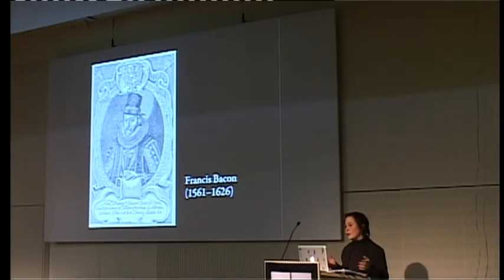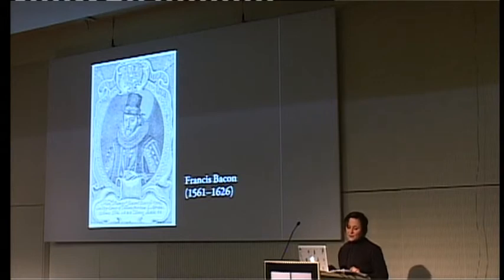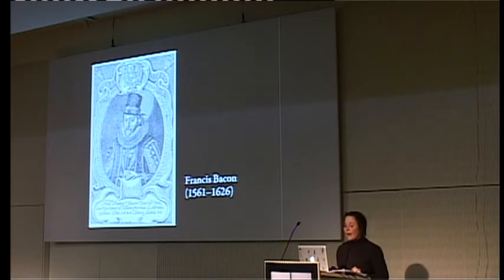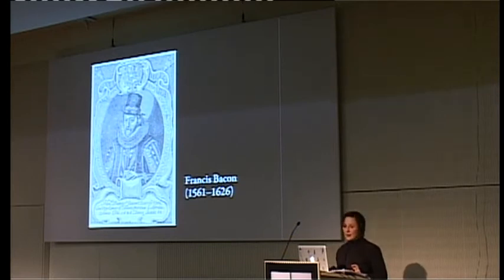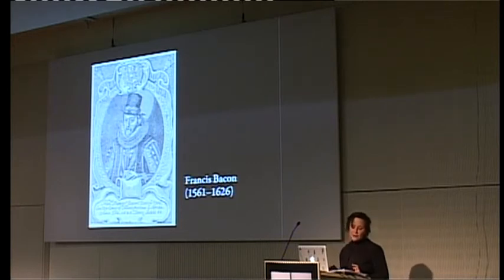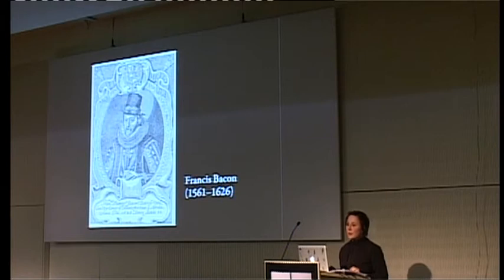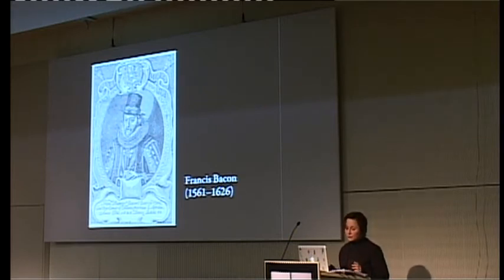Bacon said somebody should do this sometime, and then things will be wonderful, but he wasn't the one to actually do it. The science he described, he said, would be a superior natural magic. He knew Della Porta and took over many things — whole passages and experiments from Bacon actually come from Della Porta's Magia Naturalis — but he was very fond of distinguishing himself from Della Porta, saying he would do it right. Bacon was a person at court, and in a way you could say a court magician — one of his roles was to keep the English king entertained by coming up with strange things and experiments to look at.